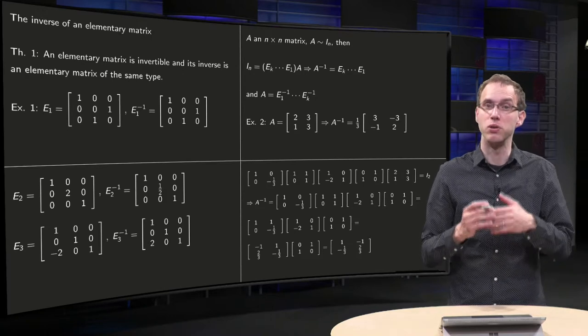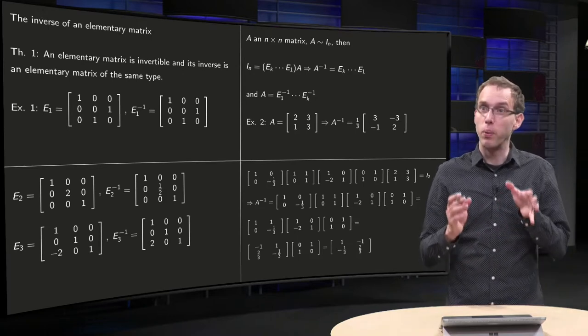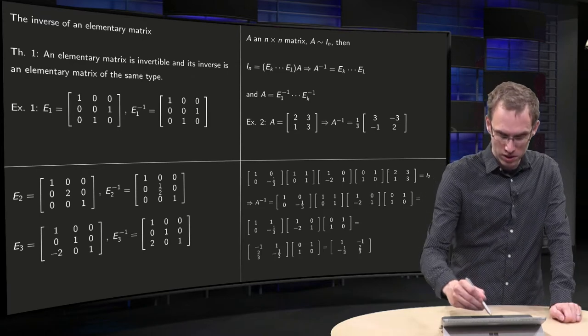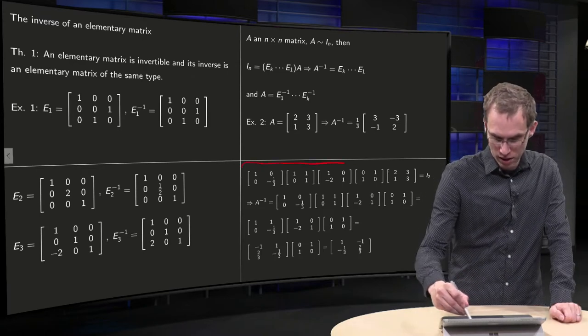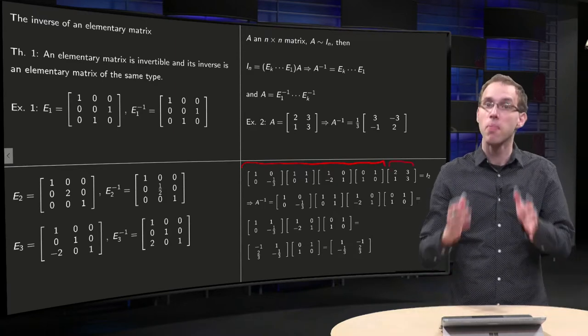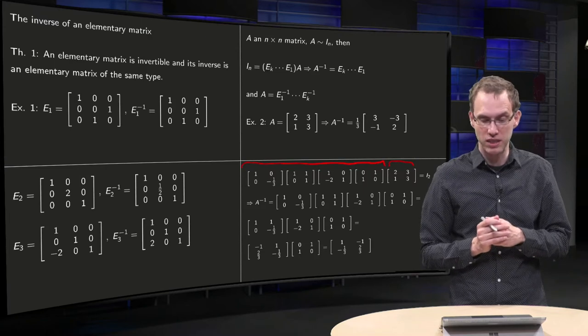But what happens if you try to use elementary matrices? Well, we know from a previous example what elementary matrices to use. Here we have our 4 elementary matrices, here we have our matrix A, and together they gave the identity matrix.